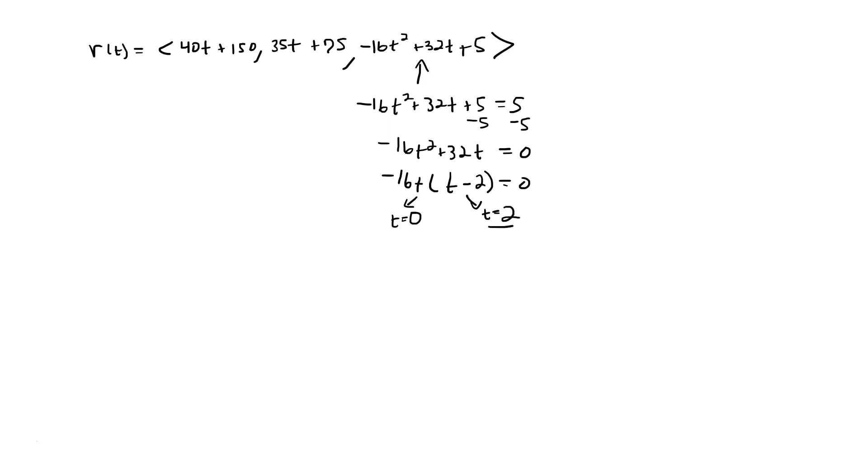So you're at 5 feet when time is 0, and it turns out that you'll be at 5 feet when time is 2 seconds. And so the flight time then is going to be 2 seconds. The ball is in the air for 2 seconds and then it's caught by the player.